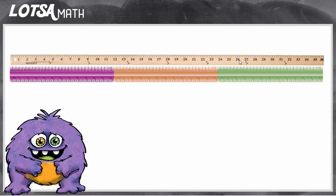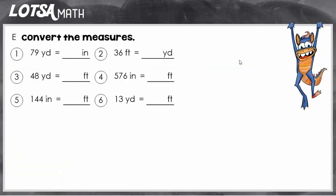Alright, so let's do some together. On number one we have 79 yards equals how many inches. Okay, so we're going from bigger to smaller, so we're going horse to fly, we need to multiply.